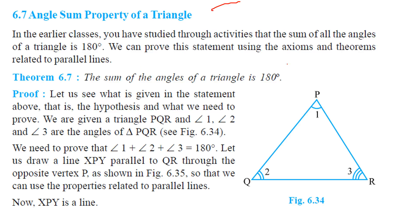Angle sum property of a triangle. We have studied that the sum of all angles of a triangle is always 180 degrees. We can prove this using the axioms and theorems related to parallel lines. The sum of angles of a triangle is 180 degrees. Let us see it.